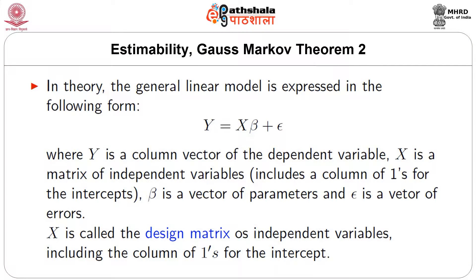Estimability and Gauss-Markov theorem, part 2. In theory, the general linear model is expressed in the following form: y equal to X beta plus epsilon, where y is a column vector of the dependent variable, X is a matrix of independent variables and includes the column of ones for the intercept, beta is a vector of parameters, and epsilon is a vector of errors. X is called the design matrix of independent variables including the column of ones for the intercept.